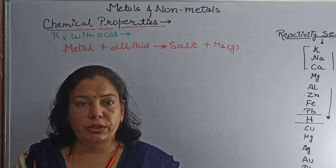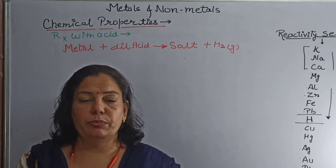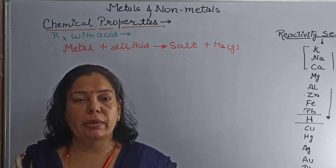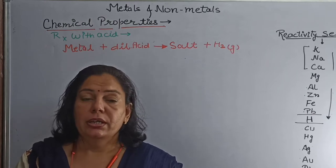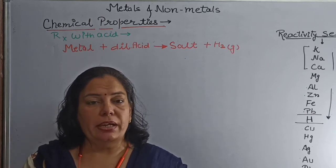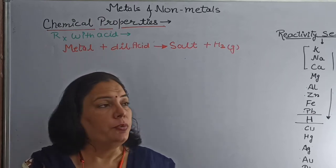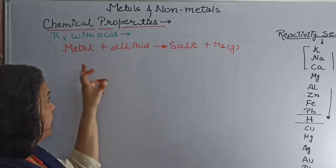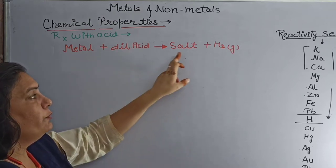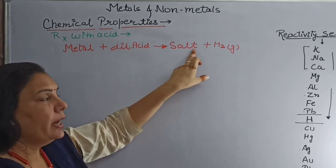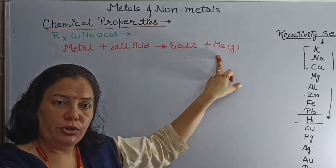Today we are going to discuss some more chemical properties of metals and non-metals. Today's first reaction is metal with dilute acid. When metals react with dilute acid, there is a formation of respective salt and hydrogen gas is evolved.